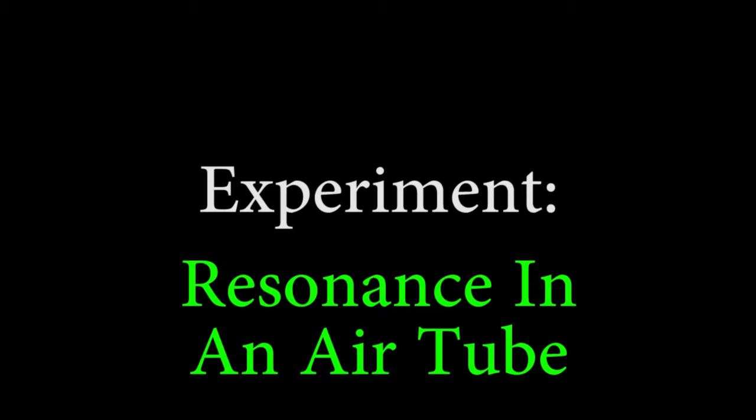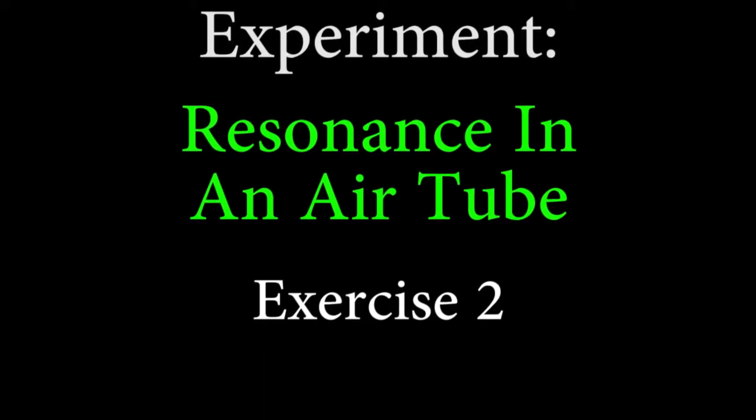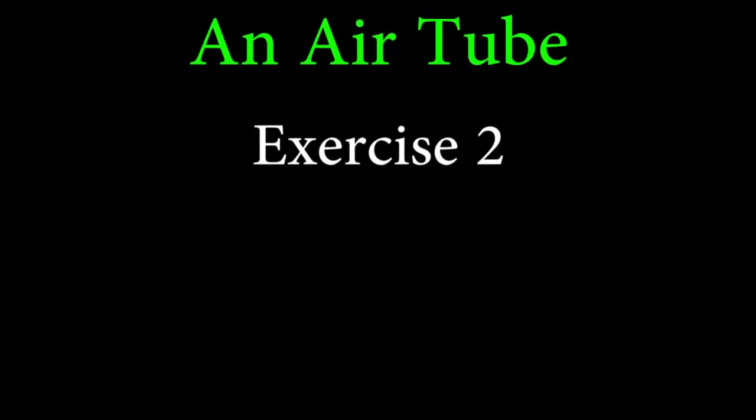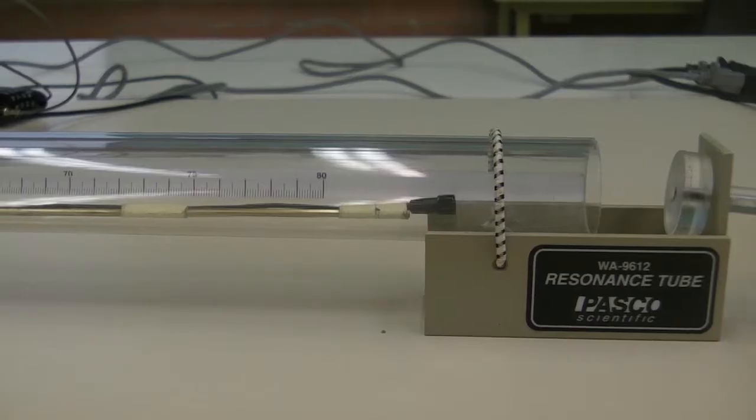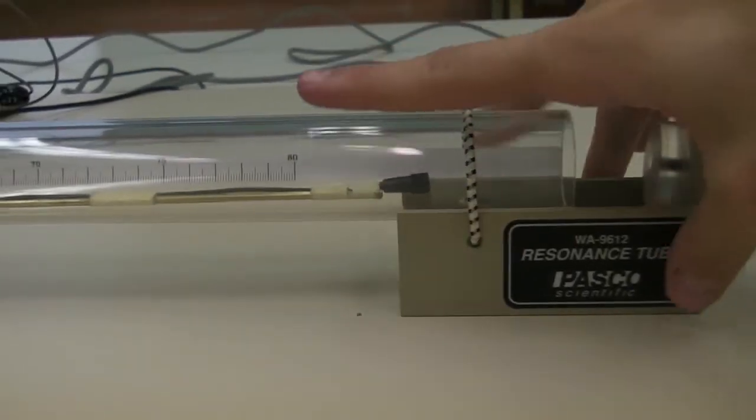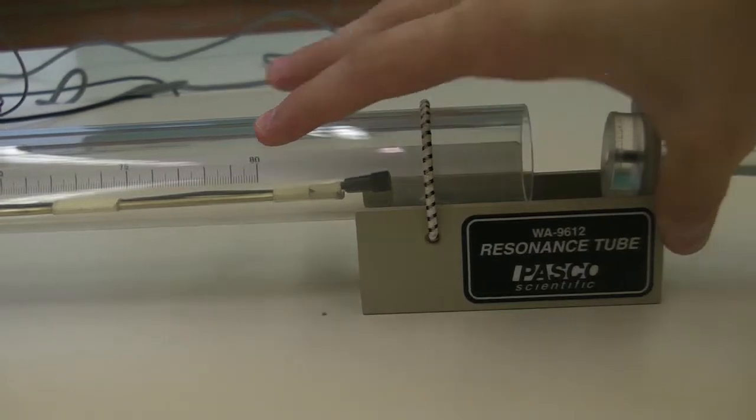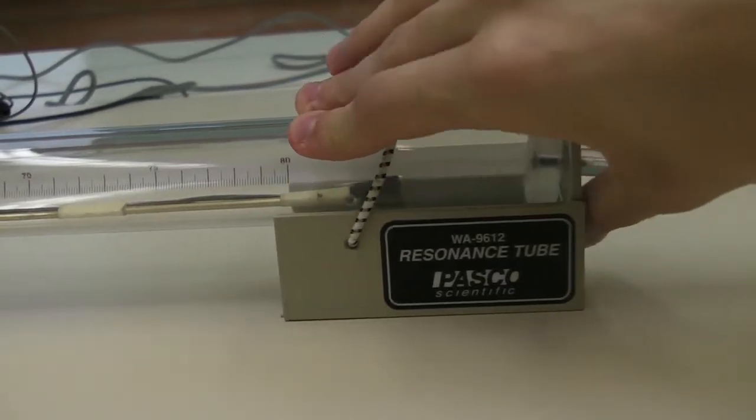In exercise 2, we'll be repeating the process of finding resonant frequencies and positions of nodes and anti-nodes for a closed tube. Now close the tube and repeat the process of measuring the resonant frequencies and the positions of the maxima and minima.